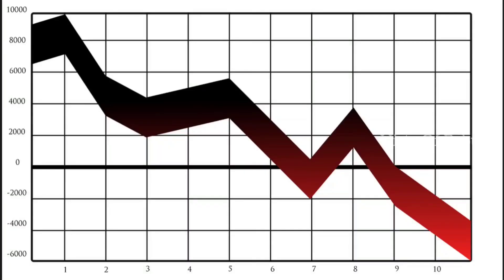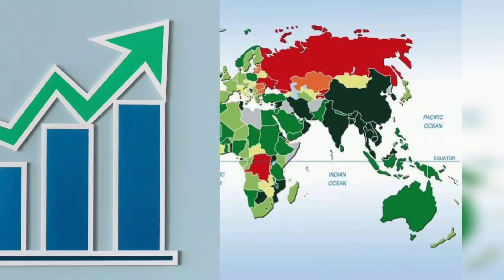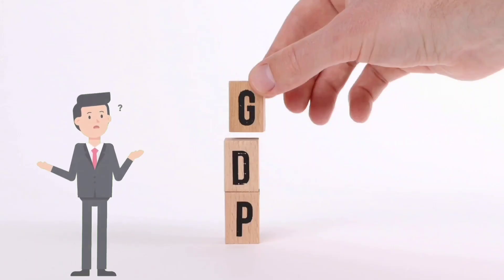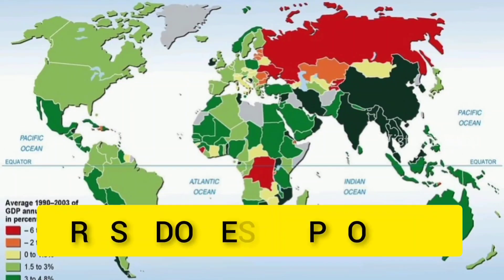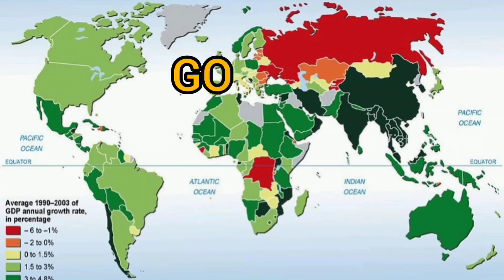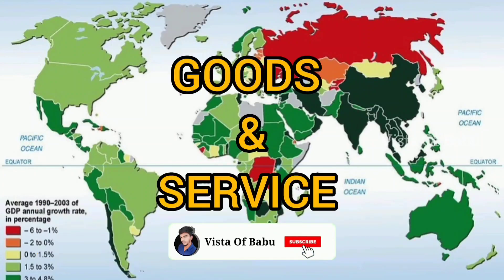In all countries, every year, GDP growth rate is very low. Let's talk about growth rate and recession. First, what is GDP? GDP is Gross Domestic Product. You can calculate GDP as a percentage. In countries, goods and services are measured by GDP. If GDP is positive, then we can say growth is faster.